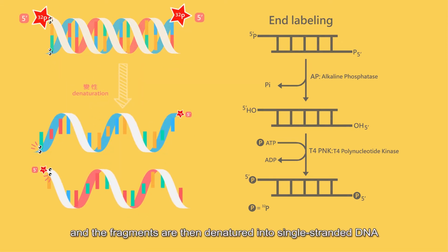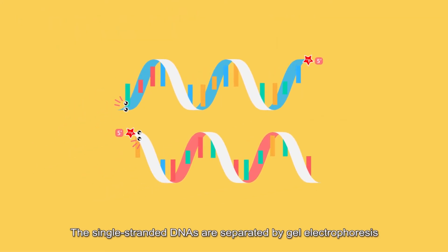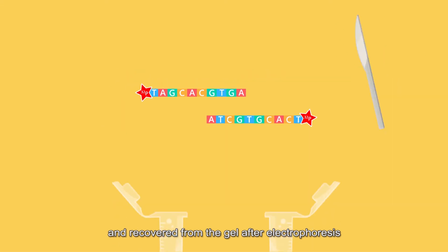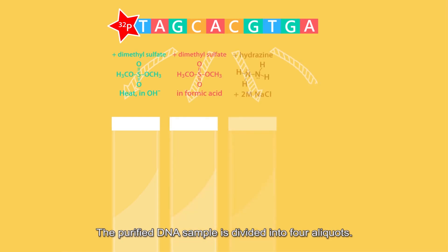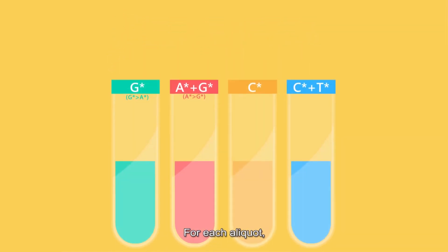The single-stranded DNAs are separated by gel electrophoresis and recovered from the gel after electrophoresis. The purified DNA sample is divided into four aliquots.